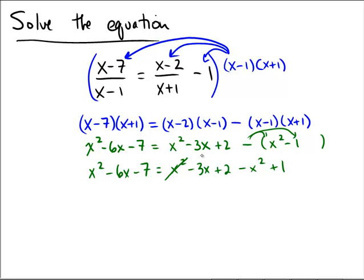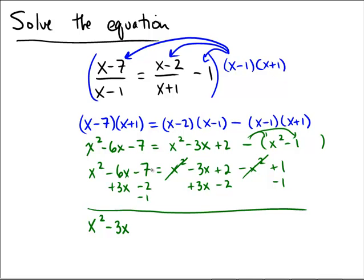Okay, now I do see some convenient cancellation there. I'm going to move all of my information over to the left-hand side for factoring, so I'm going to plus 3x, subtract 2, and subtract 1. So overall, it looks like we have x squared minus 3x, and then minus 10 equals 0.